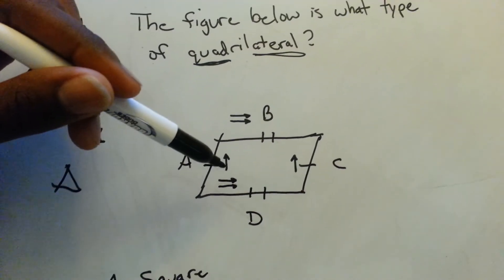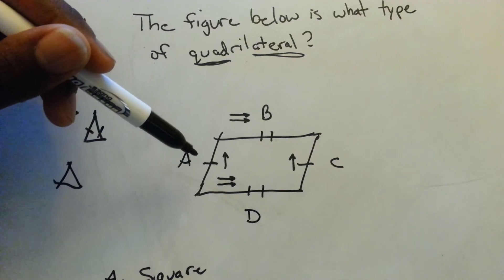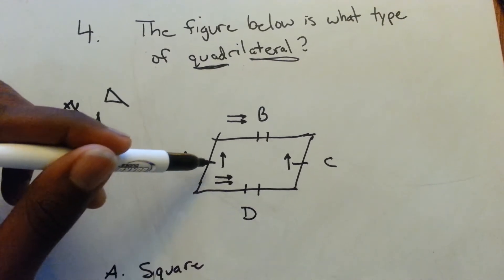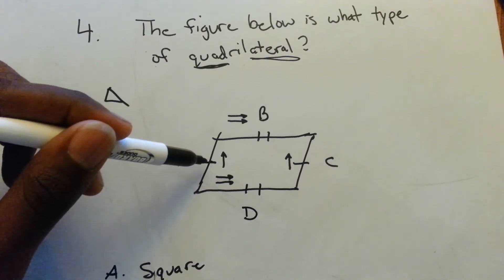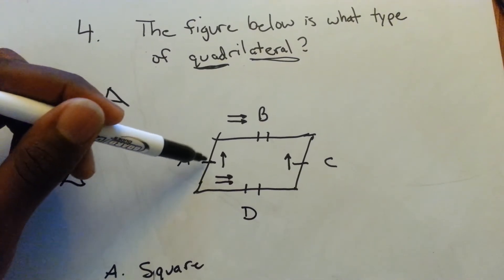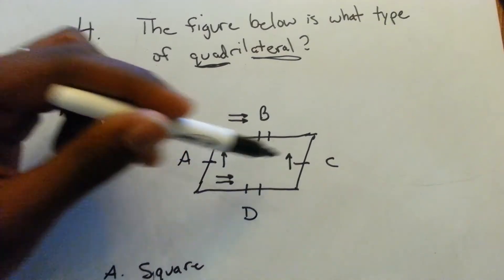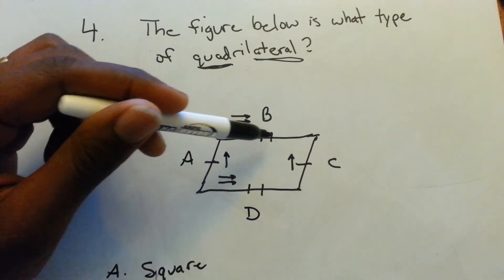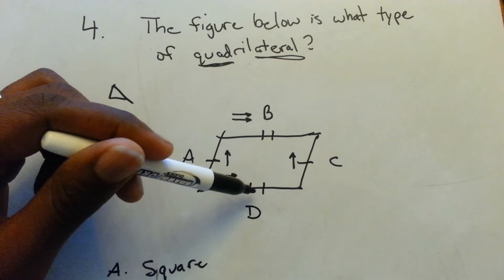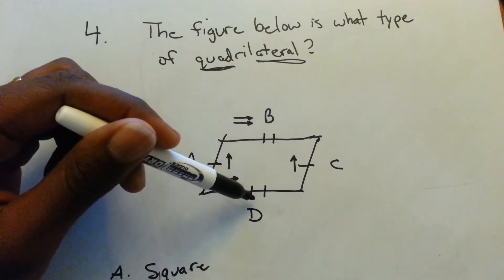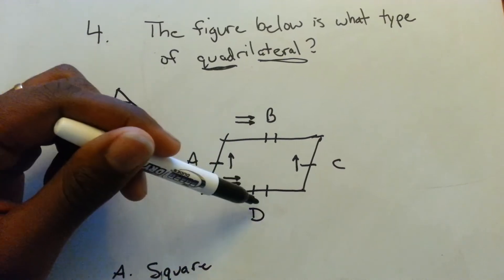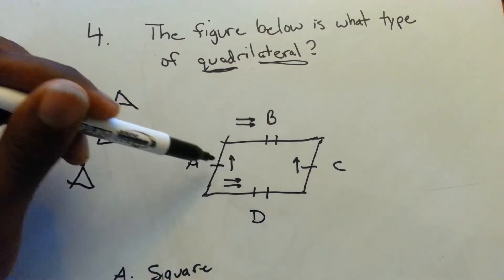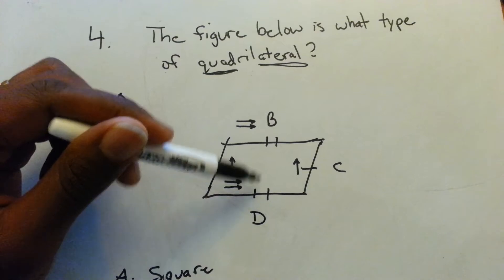Here's how to read the figure. When you see a little line or tick mark on each side, that means those sides are the same length. So side A has one tick mark and side C has one tick mark — that means A and C are the same length. Side B has two tick marks and side D has two tick marks, so B and D are the same length. This figure has opposite sides of equal length.